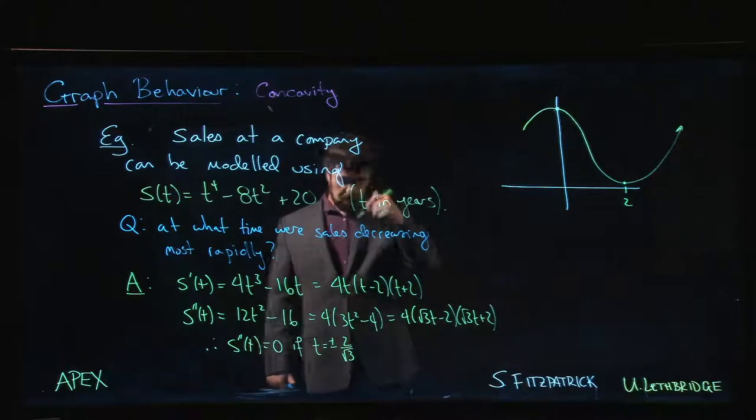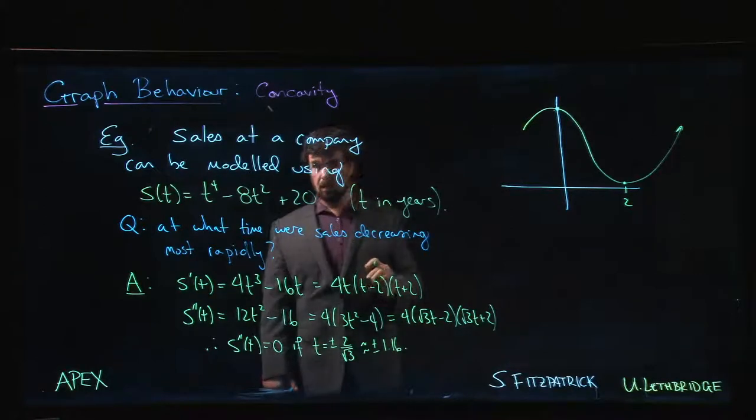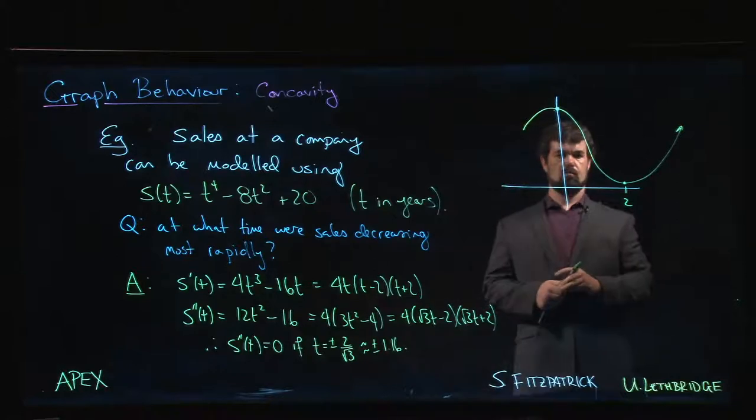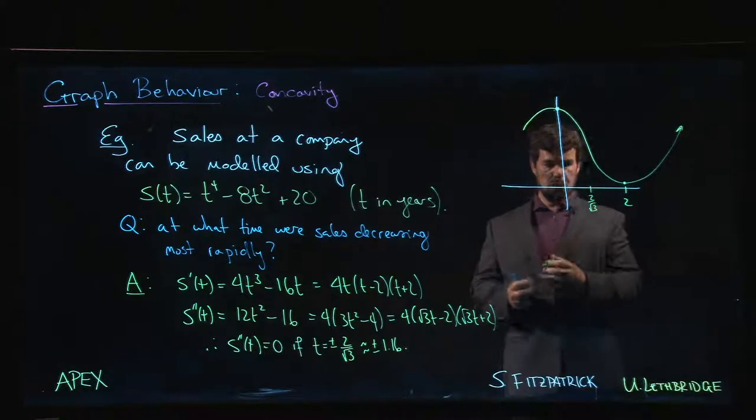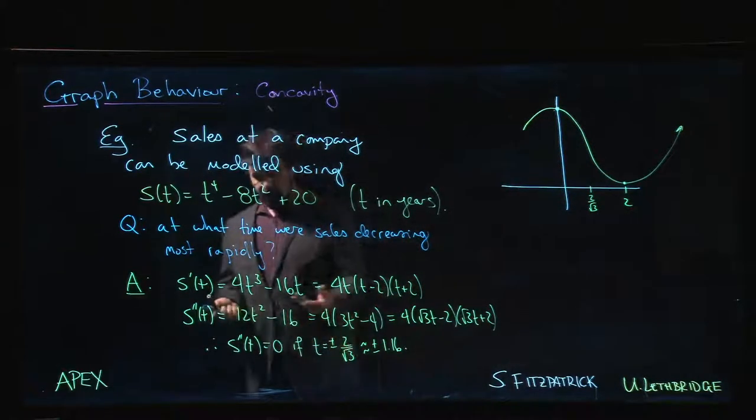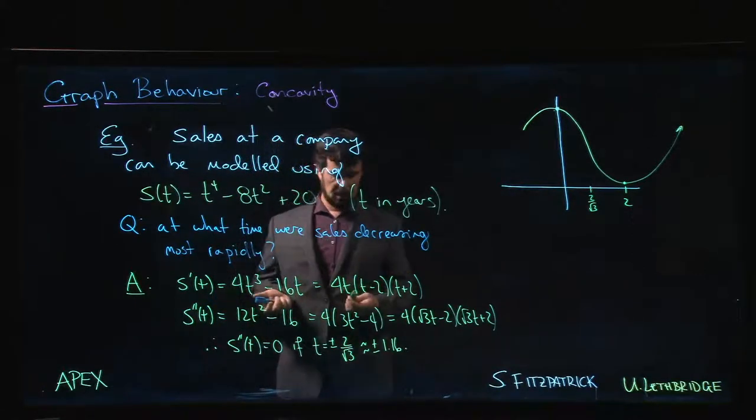This is I think around 1.16 if I remember what it says in the textbook. Somewhere around here, 2 over root 3. We're not going to include the negative solution because we're not looking at negative t. We're only looking at t greater than or equal to 0 as our domain here.